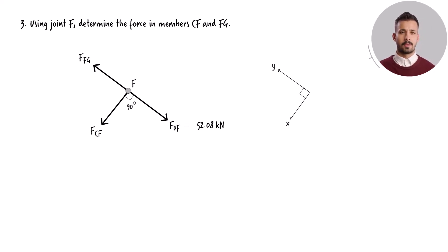Using this coordinate system, we can easily see that the only force in the x-direction is FCF. Since the sum of the forces in the x-direction must be 0, FCF equals 0. The expression for the sum of the forces in the y-direction becomes the algebraic sum of FFG and FDF. Solving this equation for FFG, we get.